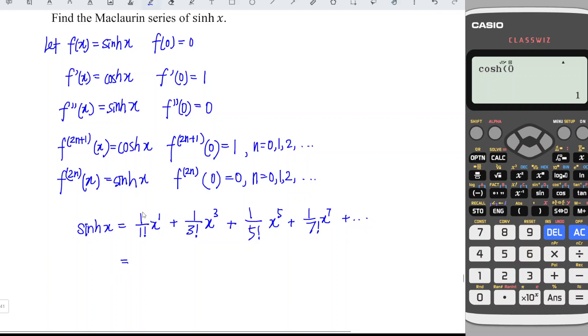So we can simplify now. So 1 over 1 is 1. So we have x plus 1 over 3 factorial is 1 over 6, x to the power of 3. Then plus 1 over 5 factorial is 120. If not sure, then we can press 5 factorial, which is equal to 120, correct? So we have 1 over 120 x to the power of 5. And the last one, 7 factorial, which is equal to 5040 x to the power of 7, and so on.